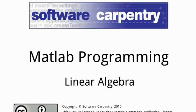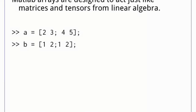Hello, and welcome to another episode of the Software Carpentry Lecture on MATLAB Programming. In this episode, we'll have a look at how to do linear algebra. The basic data type in MATLAB is the multidimensional array of floating-point numbers, and these arrays should be treated like matrices from linear algebra. In higher dimensions, we can think of them as tensors. For instance, if we multiply the arrays A and B, the product is found by the rules of matrix multiplication.